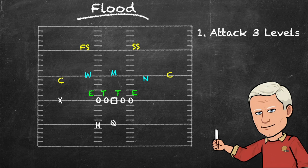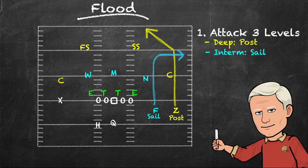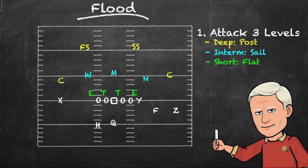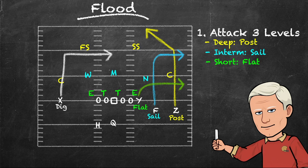A typical example of a flood concept is an outside vertical route, a slot-out route, and a shallow flat or quick-out. It gives the quarterback answers against both man and zone coverages. While there can be virtually anything tagged to the other side of the formation, a dig route is commonly tagged to the backside.